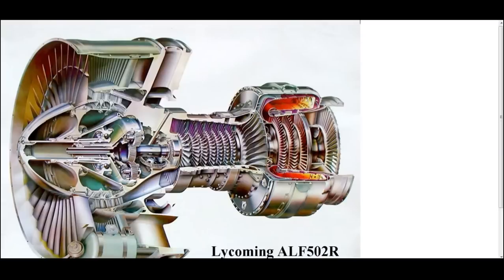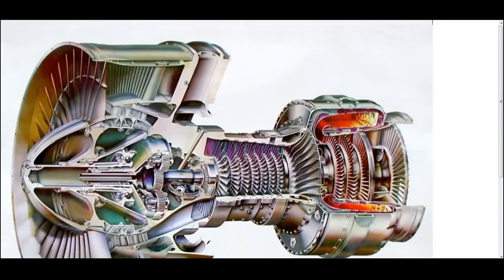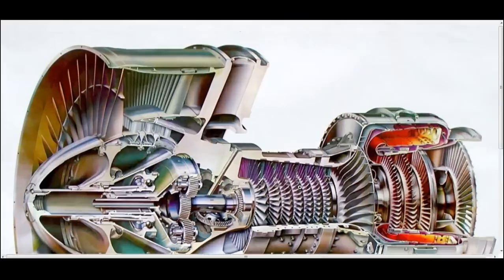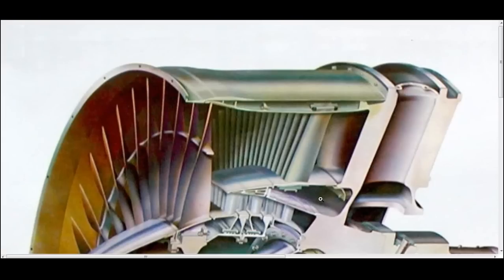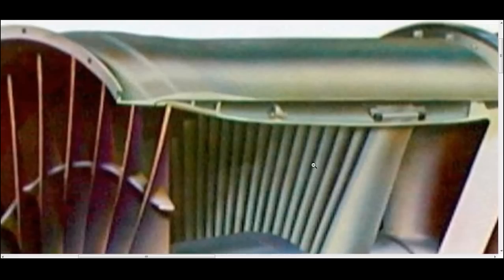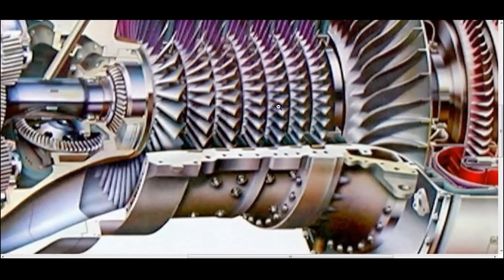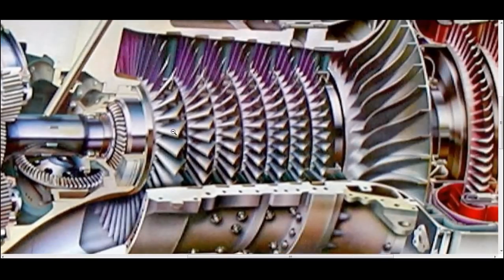Here we have a nice cutaway view of a jet engine. Here we have the bypass section, which is not shown, and here we have a compressor. These are a series of compressor blades. They're almost like small propellers in a way. They're not quite, they're engineered and designed differently.